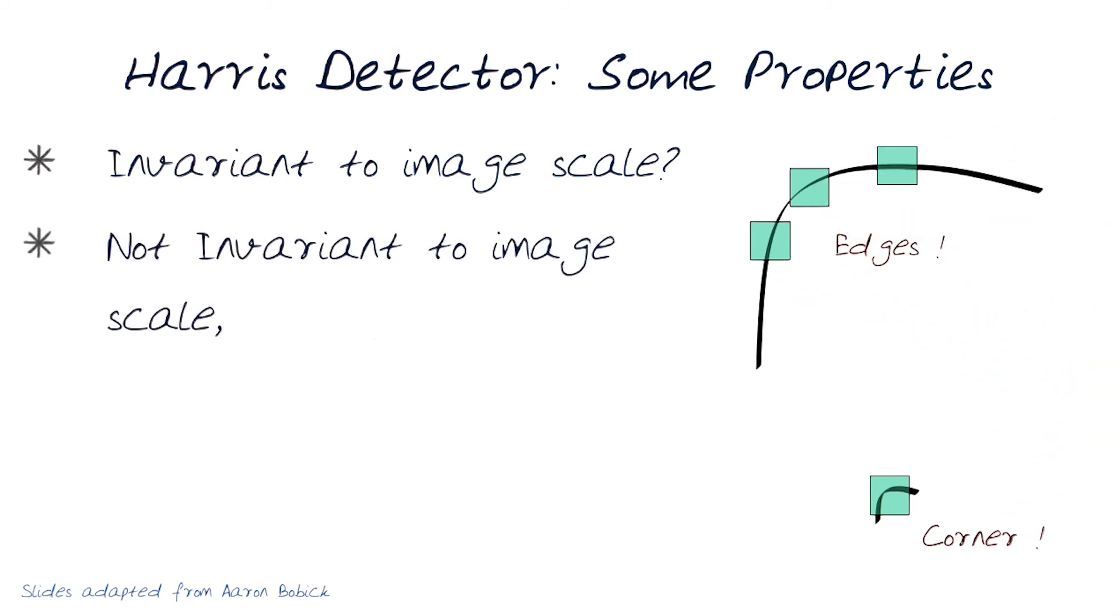So of course, this suggests that Harris detector is not invariant to image scale. So what can we do about it?